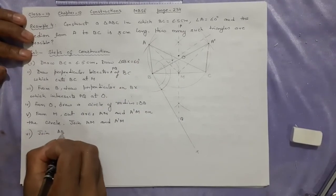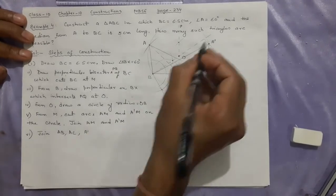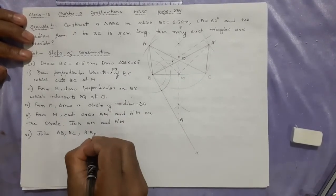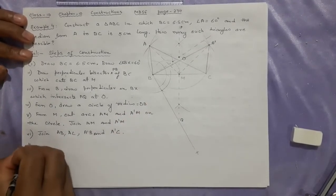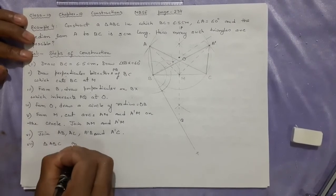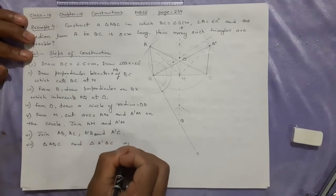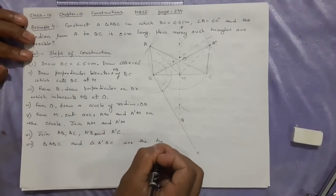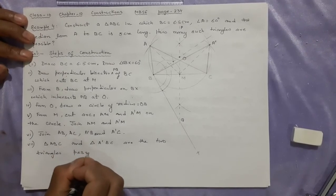Now join AB, AC. Triangle is ready. A dash B, join, and A dash C. Triangle ABC and triangle A dash BC are the two triangles possible.